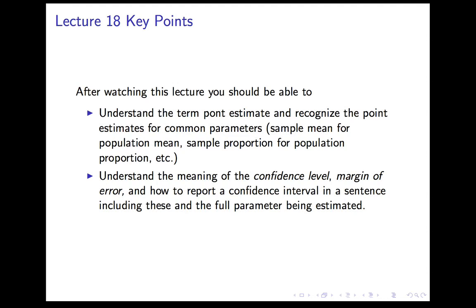So I have not yet told you how to compute confidence intervals — that happens in the next lecture. This is merely to address what confidence intervals mean. All you need to know right now: you should understand what point estimates and margin of error mean; you should recognize the point estimates for common parameters (sample mean for population mean, sample proportion for population proportion, and so on); you should understand the meaning of confidence level and margin of error and how to report a confidence interval in a full sentence. And most importantly, you should understand the interpretation: a 95% confidence interval is a procedure which, in 95% of samples, will give you an interval containing the quantity you're attempting to estimate.